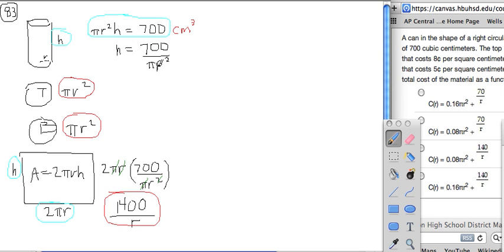We get 700 divided by πr² for the height. That's the height in terms of r, 700 divided by πr². So we're going to take what the height is in relation to r, in terms of r, and we're going to replace h with what h is equal to.